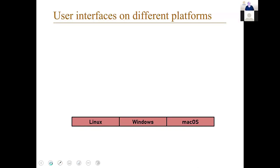A little bit about user interfaces. User interfaces on different platforms are implemented in different ways. For the major desktop platforms, we have Linux, Windows, and Mac OS. All of these operating systems have different ways of implementing user interfaces.